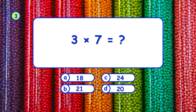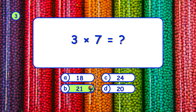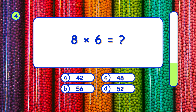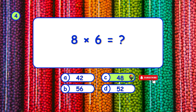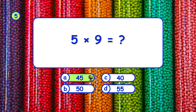What is 3 times 7? It's B, 21. What is 8 times 6? It's C, 48. What is 5 times 9? It's A, 45.